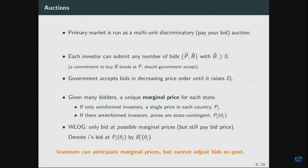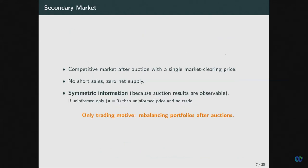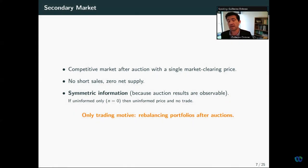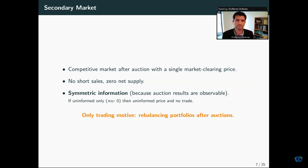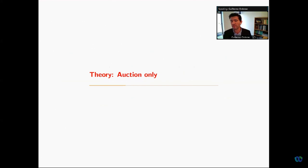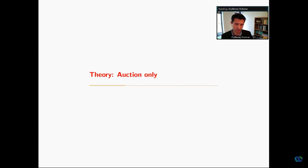That creates incentives and gains from information. Secondary markets are modeled as plain vanilla: after the auction closes, there's a competitive market with a single market-clearing price, no short sales, zero net supply. Secondary markets operate under symmetric information because everybody observes the marginal price in the auction, which is perfectly informative about the state. The only trading motive in secondary markets is portfolio rebalancing when there are differences in portfolios across investors from the primary market. Let me first show one country and just the auction, then discuss what happens with a second country and secondary markets.